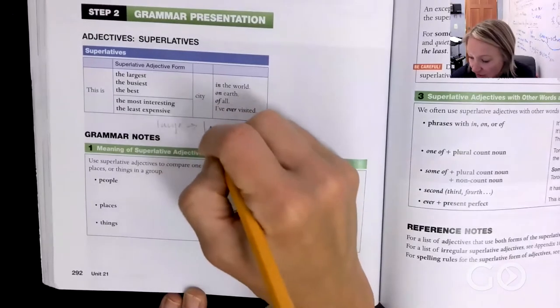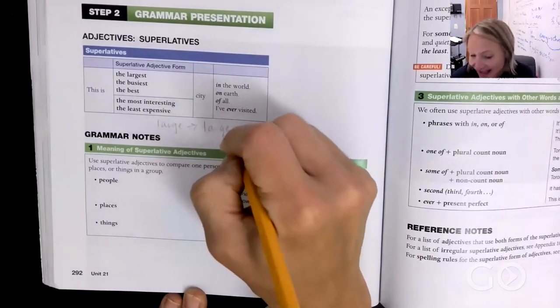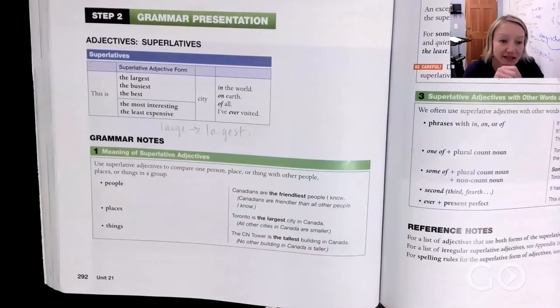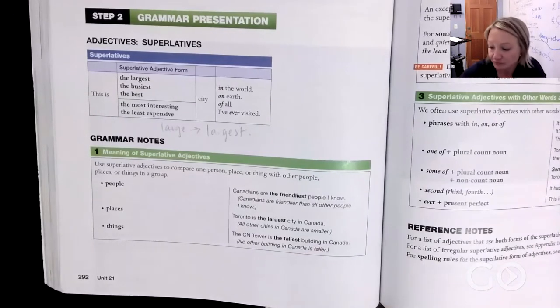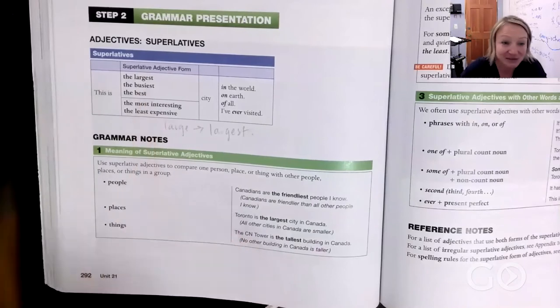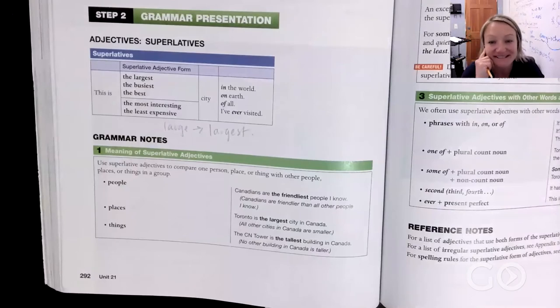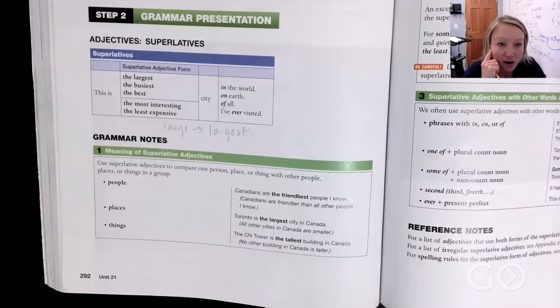In many cases you're removing the e. And with busy, with that y, you change that to i and add e-s-t. So this is the busiest city on earth, this is the best city of all, this is the most interesting city on earth.